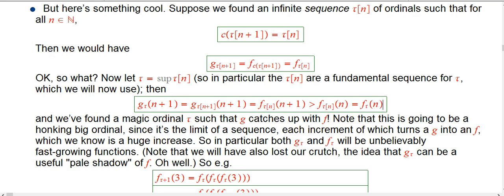That is the answer to our first question. This gives us a recipe for finding a magic ordinal tau such that g catches up with f, if we can find this collapsing operation that has this nice relationship between f and g, and a sequence tau that's a collapsing chain. That is actually going to be pretty easy once we set up all the other machinery.